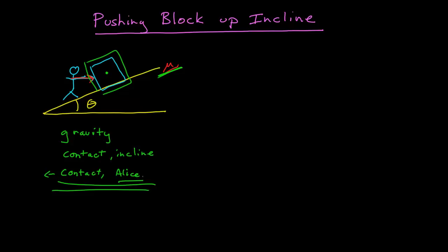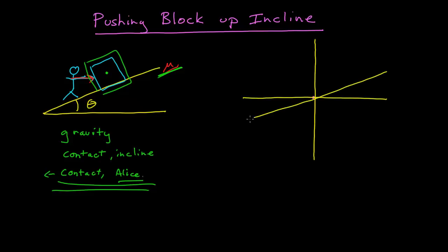Let's do a free body diagram for this problem. I have my box here. Since I'm working with an incline, what I like to do is get myself two sets of axes: one that's parallel and perpendicular to the ground, and the other parallel and perpendicular to the incline. This really helps me align my forces to figure out the geometry. I know from my picture that one angle is theta, and because of geometry, I know that angle is theta in multiple places. Getting this set up at the beginning can really help in figuring out the directions of forces.